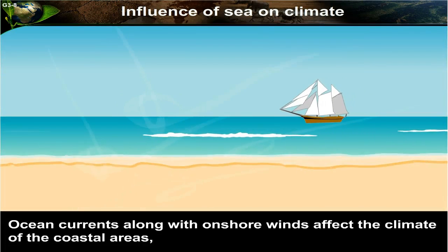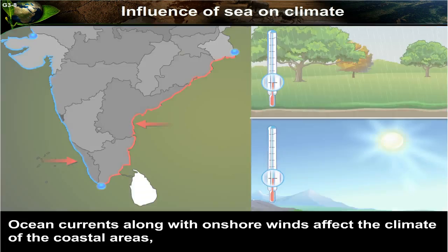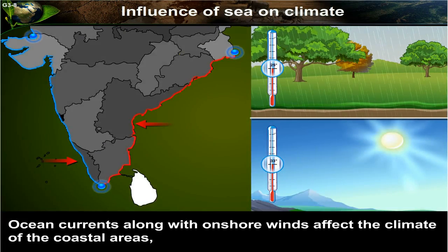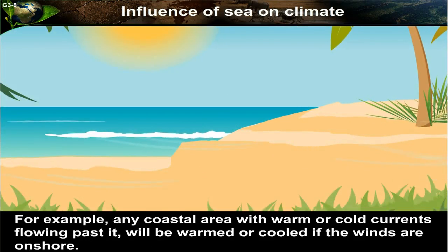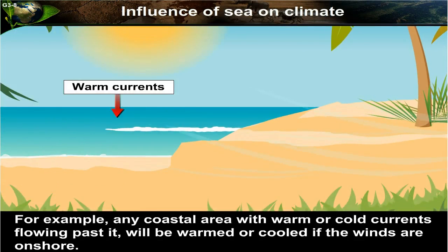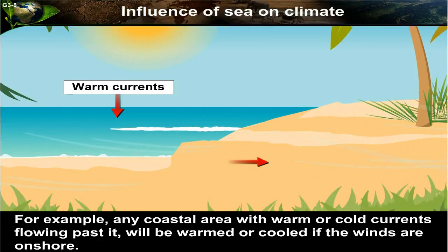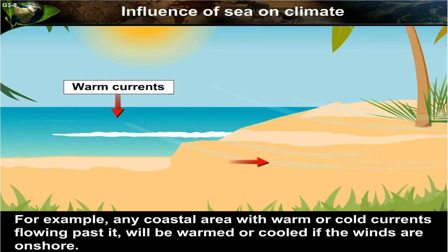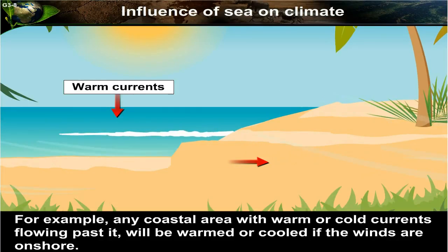Ocean currents along with onshore winds affect the climate of the coastal areas. For example, any coastal area with warm or cold currents flowing past it will be warmed or cooled if the winds are onshore.